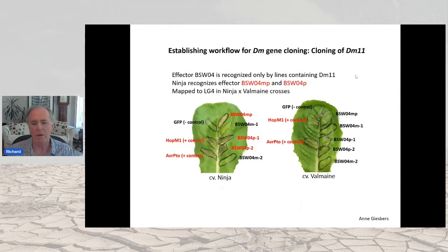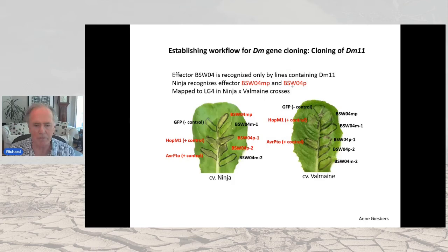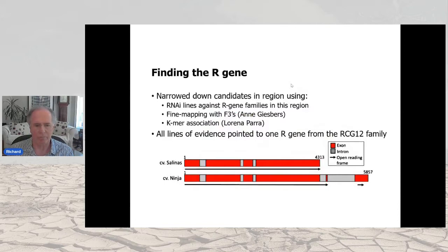One way to drill down to resistance genes is to clone candidate avirulence genes from the pathogen based on sequence. In oomycetes there are classic signatures for so-called RXLR proteins. You can clone them and express them using Agrobacterium-mediated transient expression in resistant and susceptible cultivars. In resistant plants you get detection — typical necrosis — whereas in susceptible plants you don't. This allows you to map the reaction, and we've done fine mapping for a particular set of Avr genes.